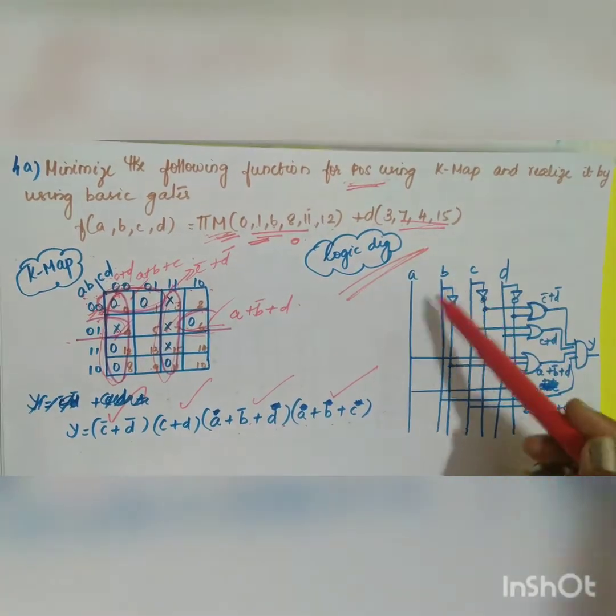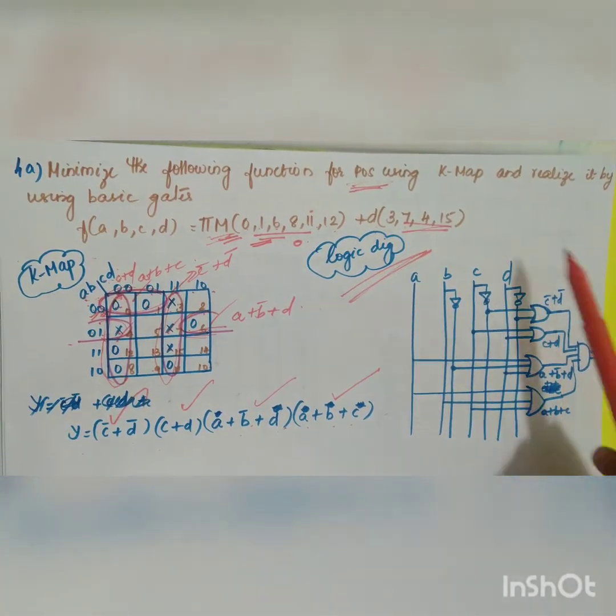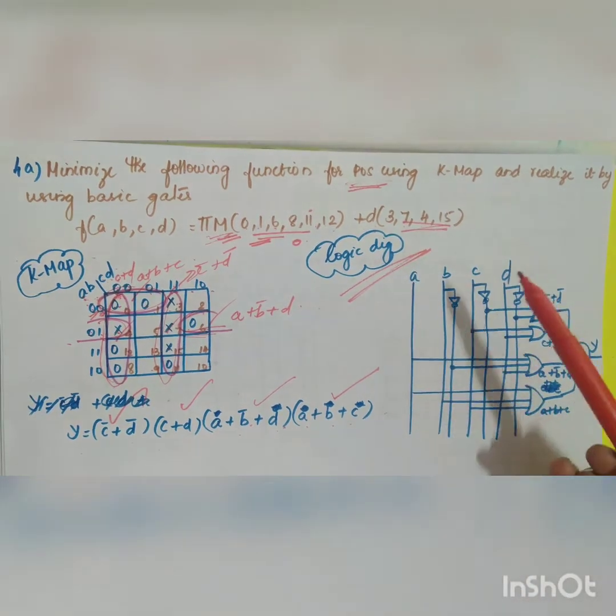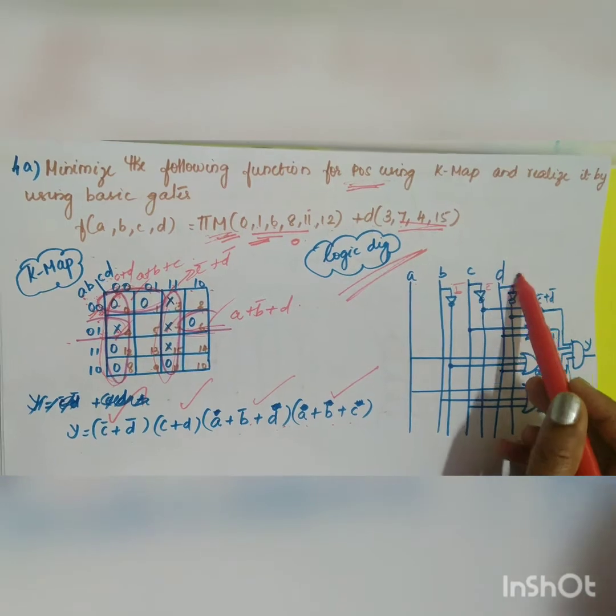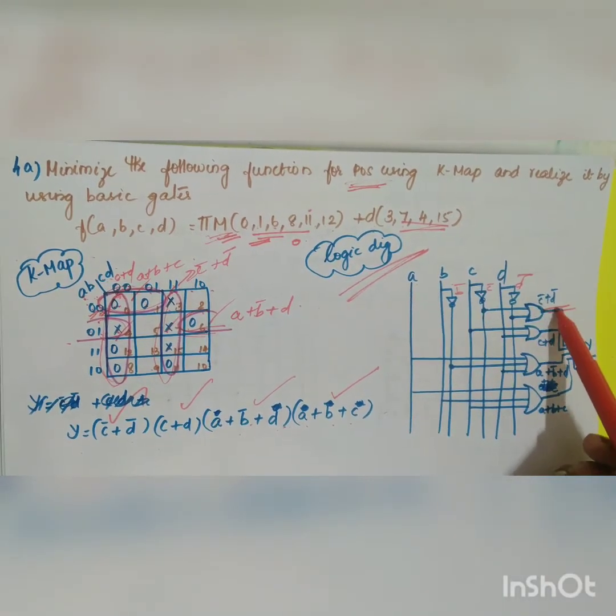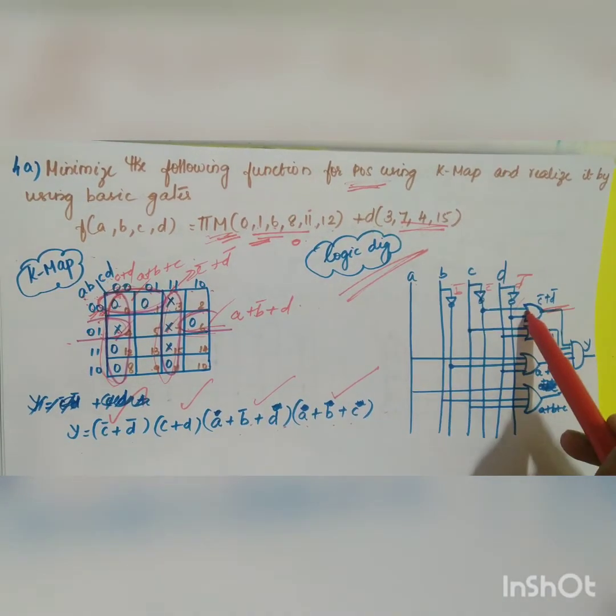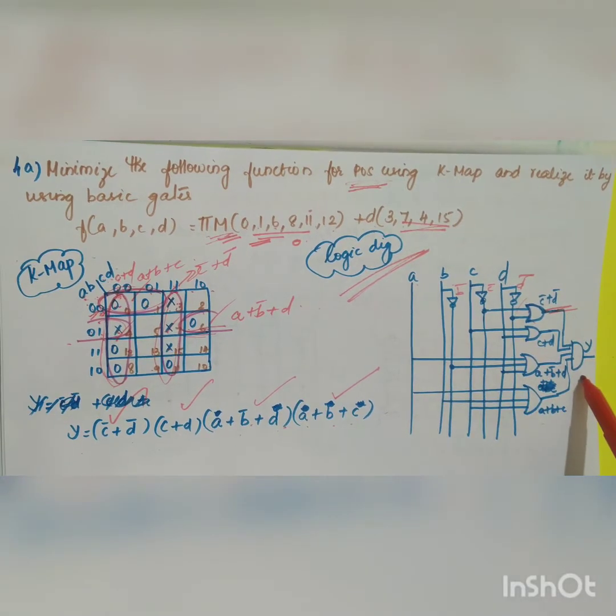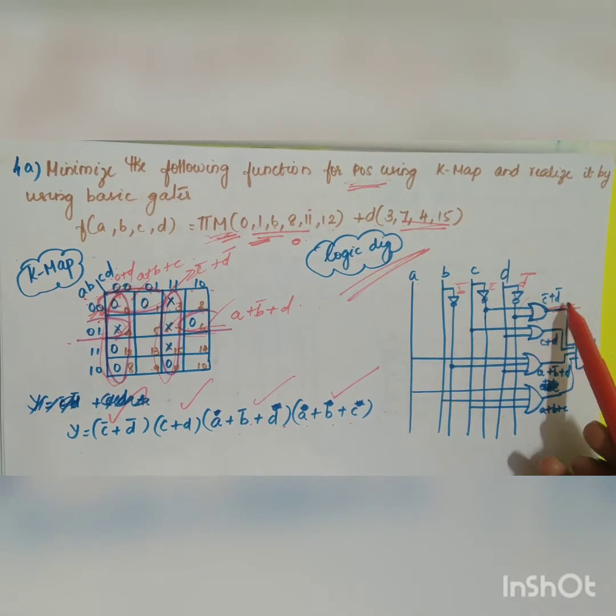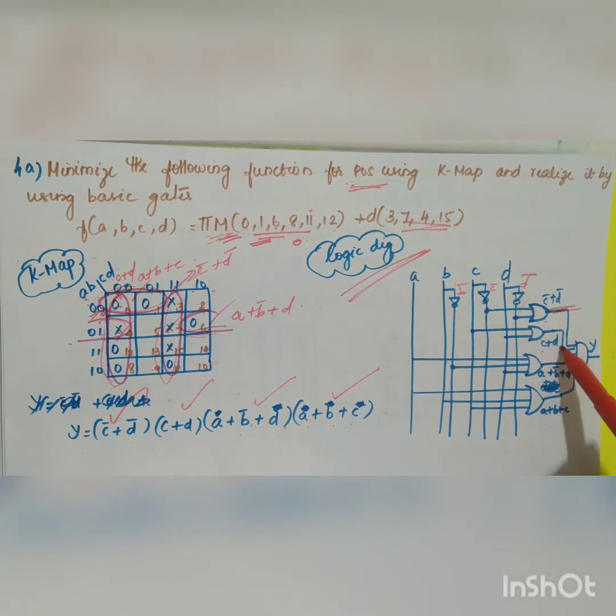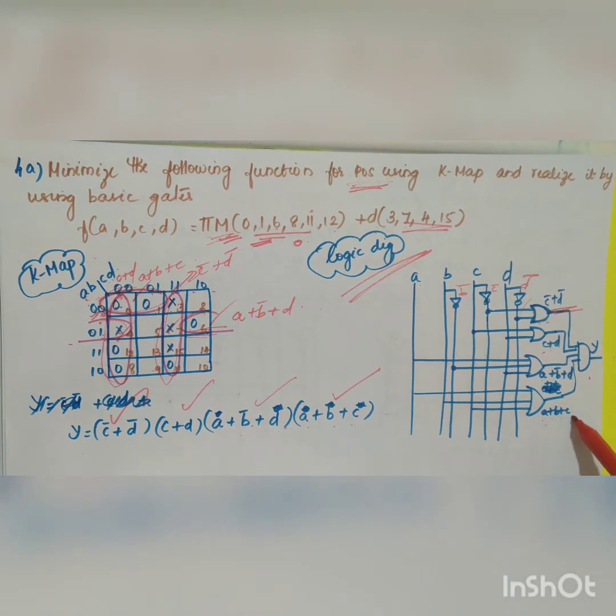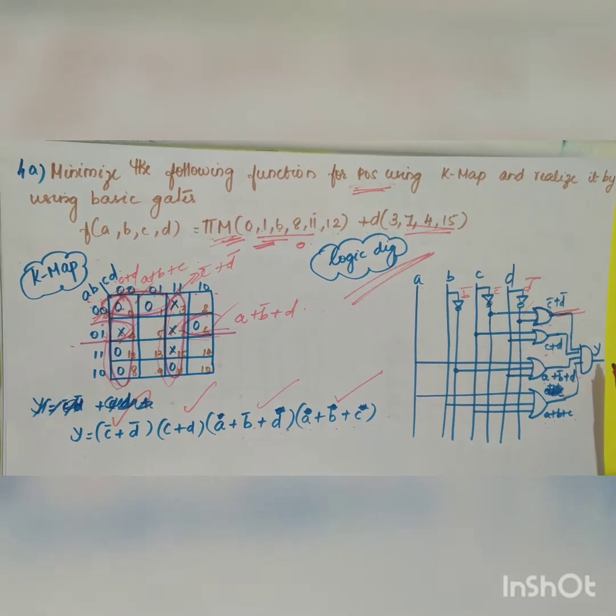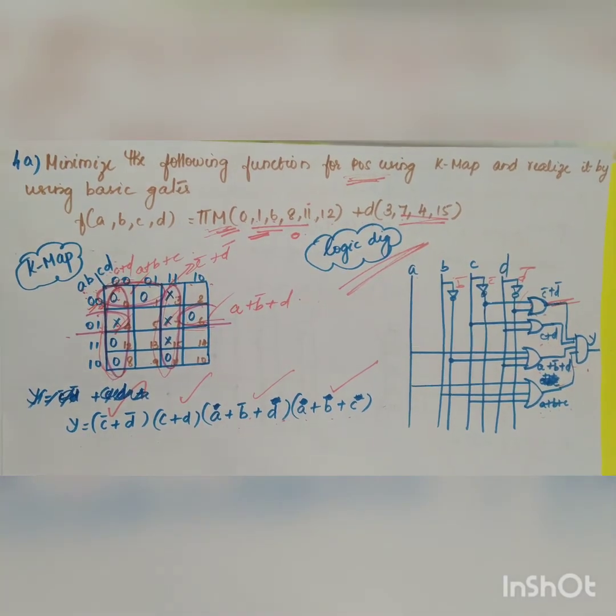This can be converted into your logic diagram can be drawn logic diagram using your basic gate. A b c d. Here you will be getting b bar c bar d bar. What is your first factor c bar plus d bar. You are going to use or gate for sum and your and gate finally for your multiplication. C bar plus d bar. Second one will be c plus d. Third one will be a plus b bar plus d and fourth one will be a plus b plus c which will give it will be given to your and gate and you will be getting your output.